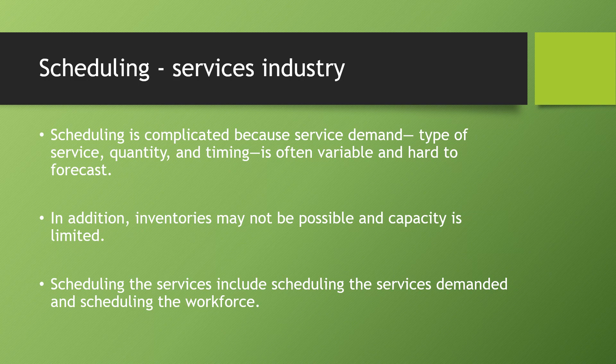The type of service varies with customers and with time, and we cannot predict it. The quantity is also difficult to forecast — one time a customer may eat two or three dosas, and next time limit it to one. The demand for quantity is also a question mark. The timing for services is also unpredictable; maybe early evening or late at night, restaurants need to be open, but customer footfall will differ based on timing.